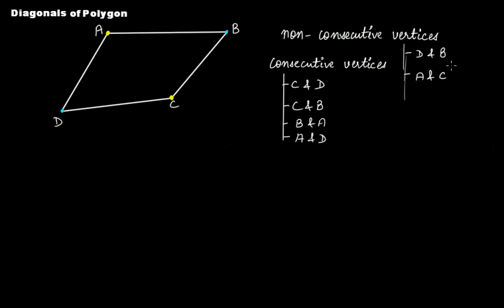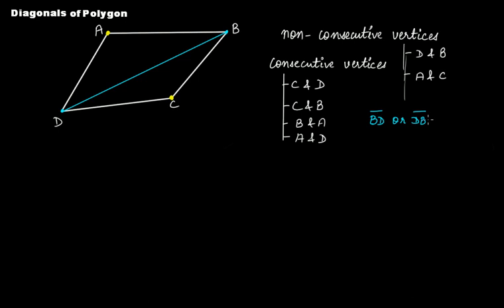Whenever we connect two non-consecutive vertices, we get a diagonal. So if you connect B with D, this is a diagonal. The diagonal is BD, or DB — the line segment BD or the line segment DB.